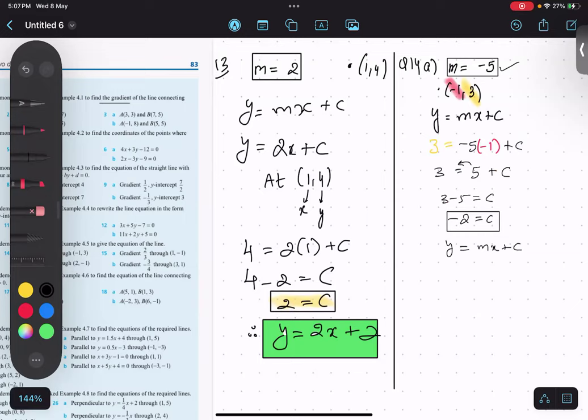So y, m value was minus five x, and c value was minus two. So minus two comes over here. So this becomes my equation.